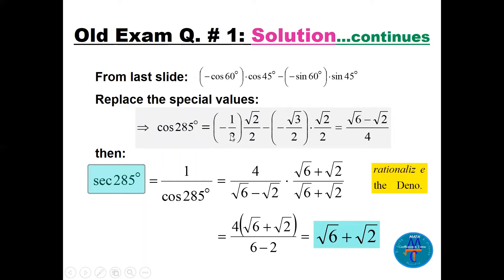Cosine(60) is one-half, and cosine(45) is √2/2. There is a minus from the formula, and sine(240) is −√3/2 while sine(45) is √2/2. The two minuses become a plus, giving us (√6 − √2) / 4. This is cosine(285).